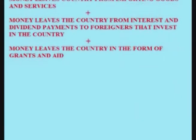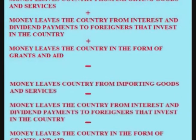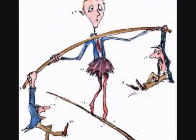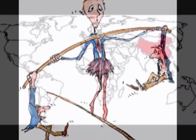In other words, it's all the money that comes into a country from trade, income, and grants, minus all the money that goes out of a country from trade, income, and grants. Because it is the largest section of the current account, current account surpluses and deficits usually come from the balance of trade section.